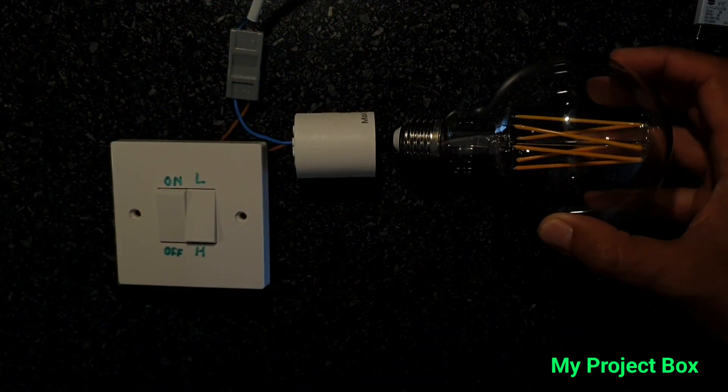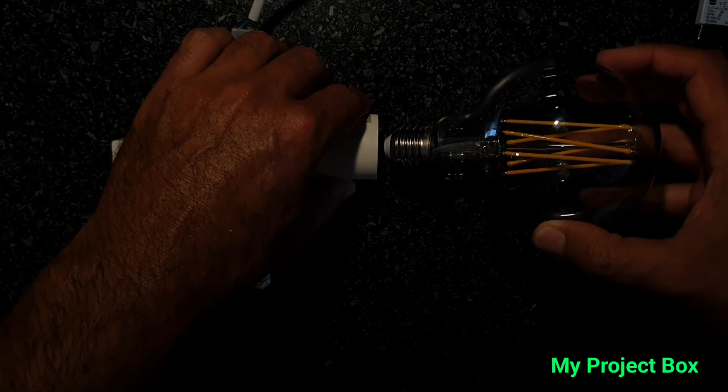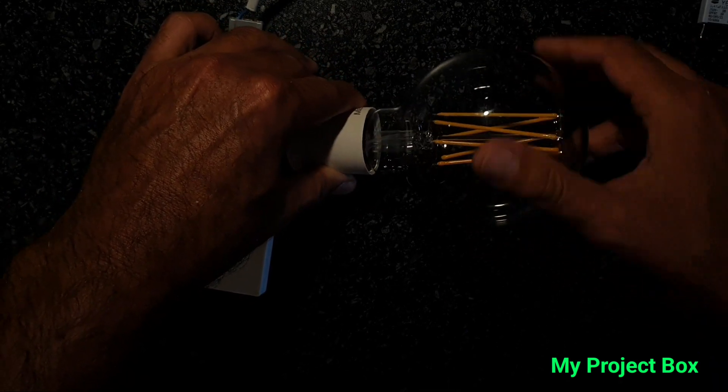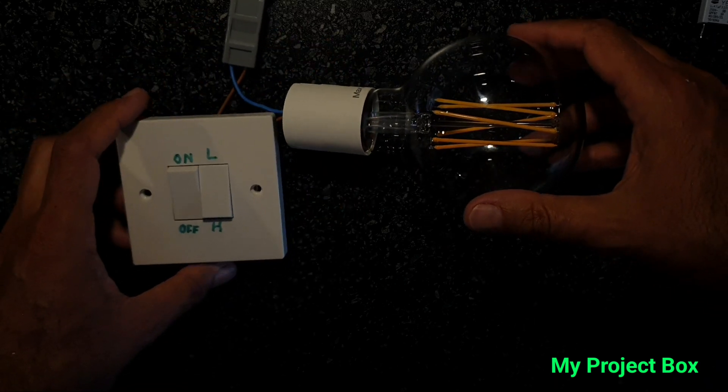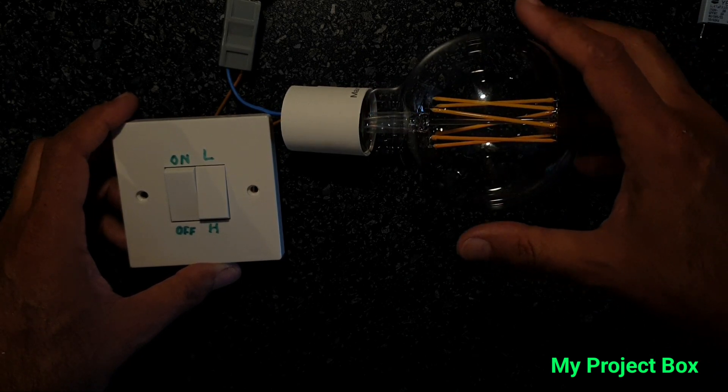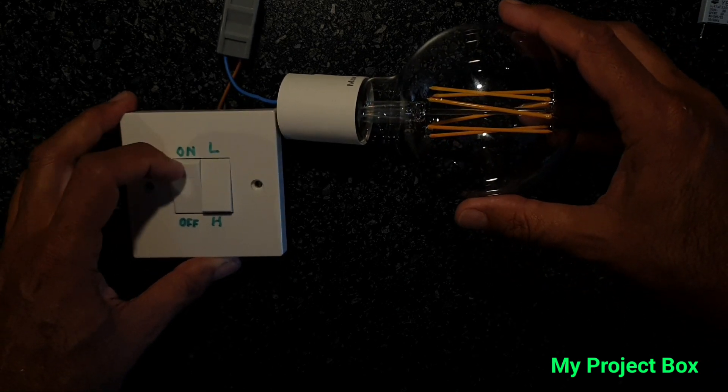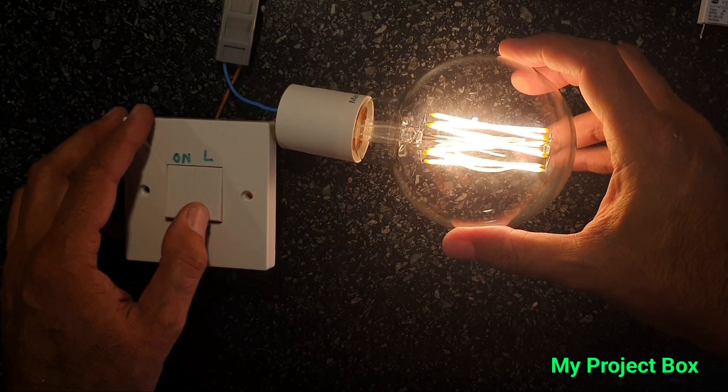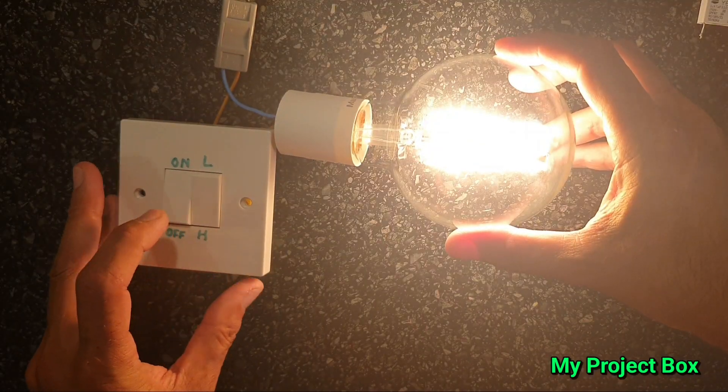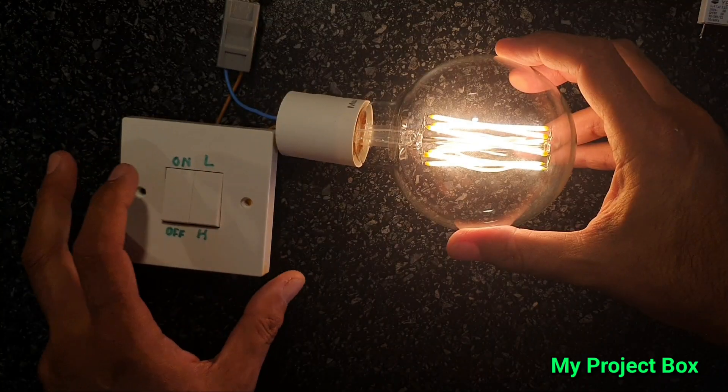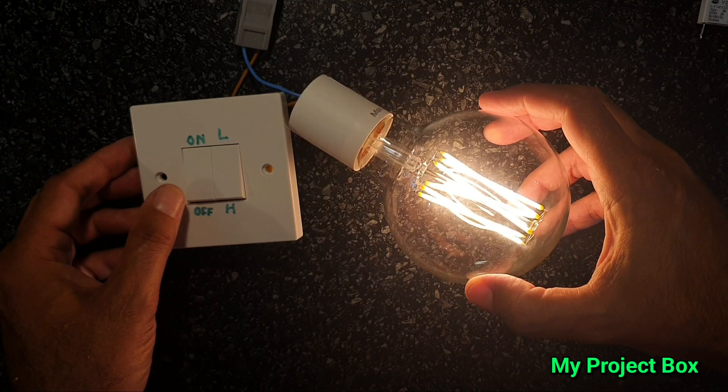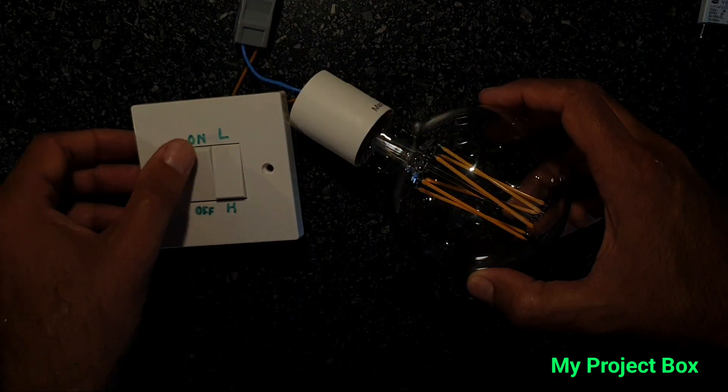Now I've locked the exposure so that we can see a demonstration of the dimming action, and we'll try it on the low setting first. Now bear in mind this filament bulb is not dimmable, so we'll turn it on. So now it's in the low setting, and if we flick this button here, we have maximum brightness and low brightness. Quite nice, isn't it? We've turned the non-dimmable light bulb into a dimmable one, and that's on and off.